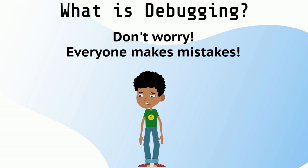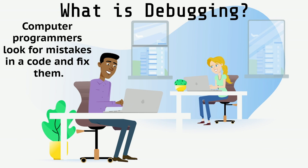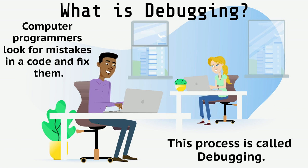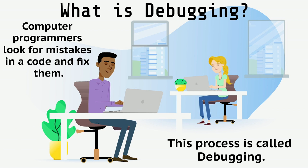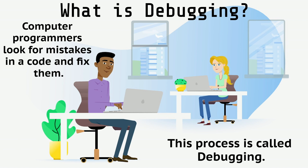Everyone makes mistakes. Computer programmers look for mistakes in a code and fix them. This process is called debugging. That way, a computer will have the correct instructions to follow.